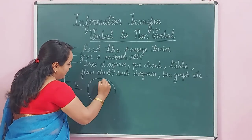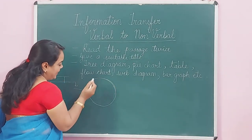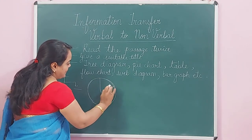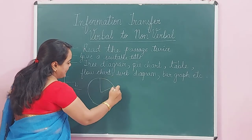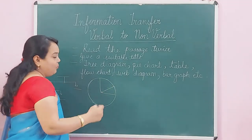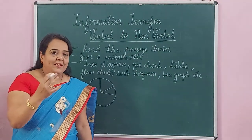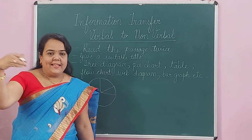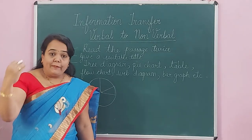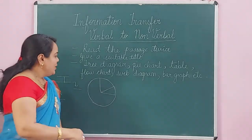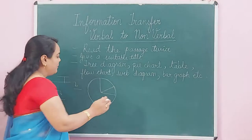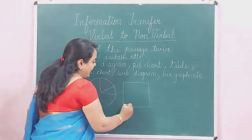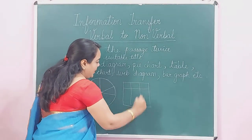A pie chart is usually drawn when the information is given in percentage form. For example, 10% of students fail in SSC social science, 35% fail in maths — so information given in percentage form means you draw a pie chart. A table is drawn when information is divided into broad categories.